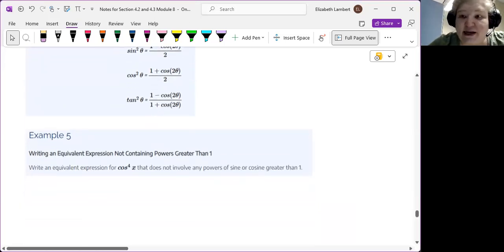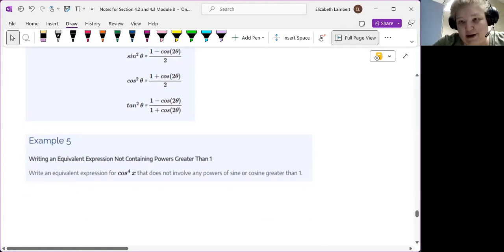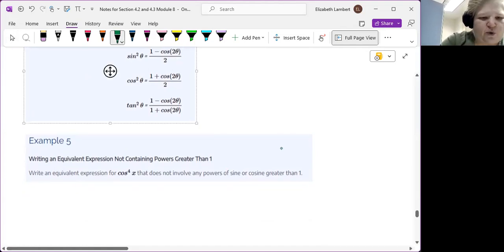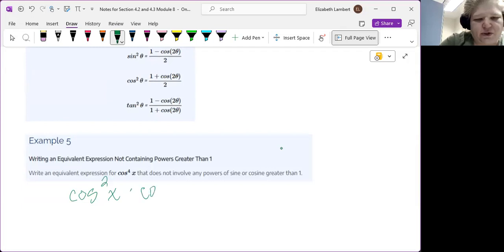And this here is another classic example that you will see in Calc 2. So write an equivalent expression not containing powers greater than one. So we're going to write an equivalent expression for cosine to the fourth. So my power reduction formula is up here for cosine squared. So I'm going to split cosine to the fourth here into cosine squared times cosine squared.